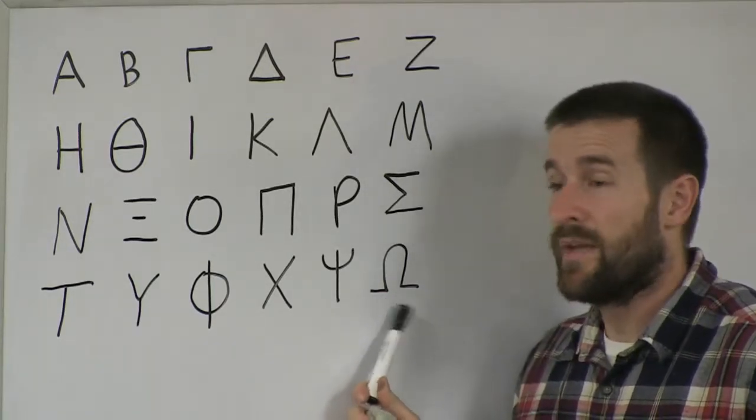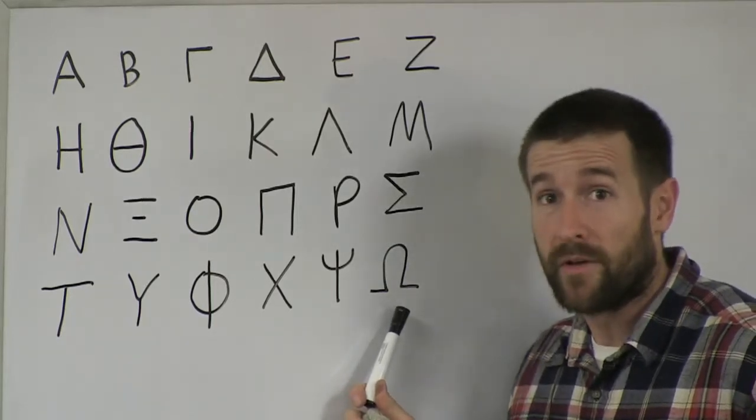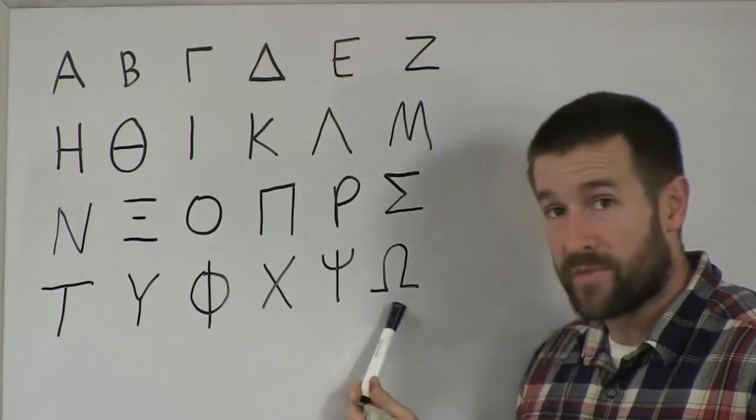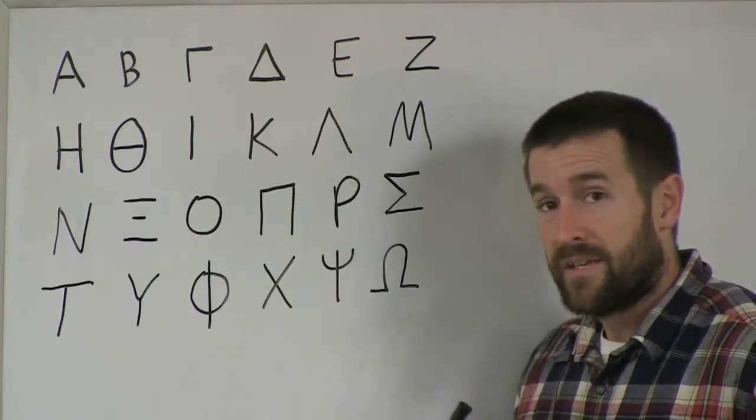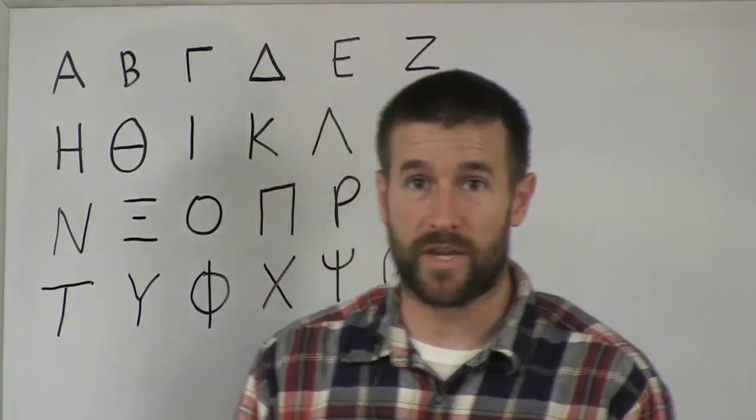Because one of the measurements that we use a lot in electrical work is the measurement of the ohm. And you've probably heard of Ohm's Law. And the symbol for ohms is this little omega symbol. So in the next video, we're going to learn Revelation 22:21 in Greek.